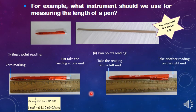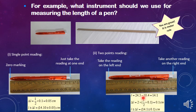You may also measure the length of the pen using two-point reading. Take the reading on the left end of the pen and also take the reading on the right end of the pen. The length of the pen is 24.5 minus 10.4, which is 14.1 cm. The uncertainty for two-point reading is the smallest division of the meter rule, which is 0.1 cm. Therefore, the length of the pen is recorded as 14.1 ± 0.1 cm.